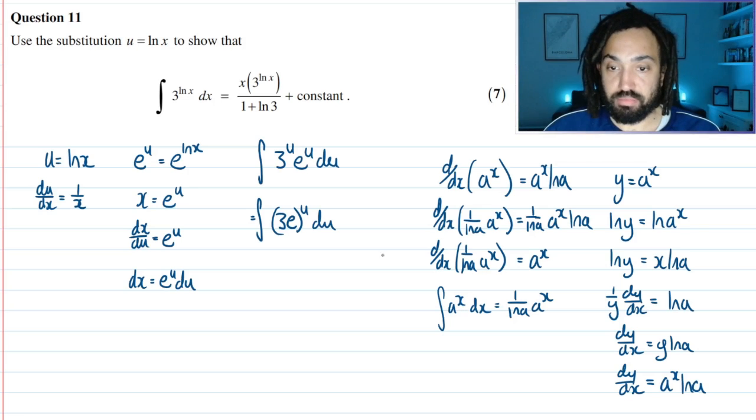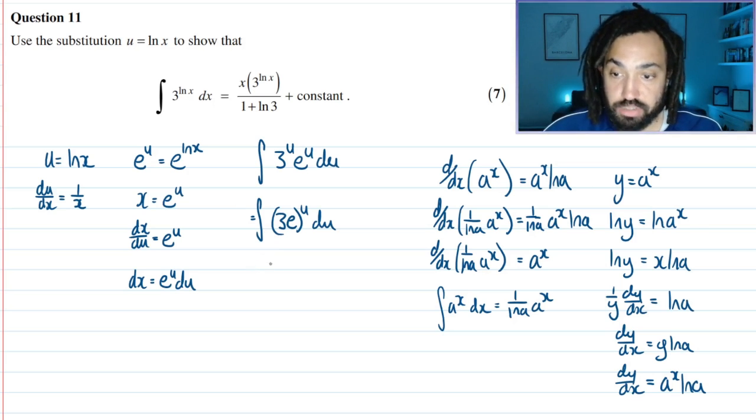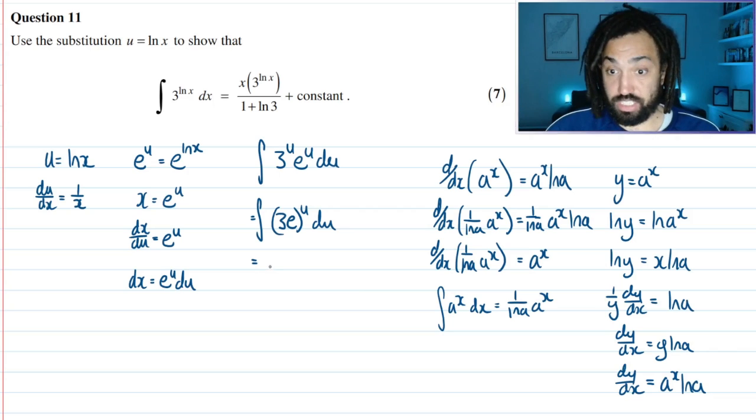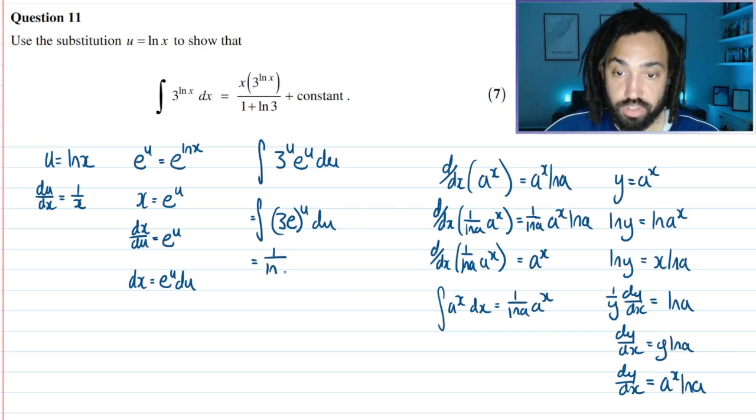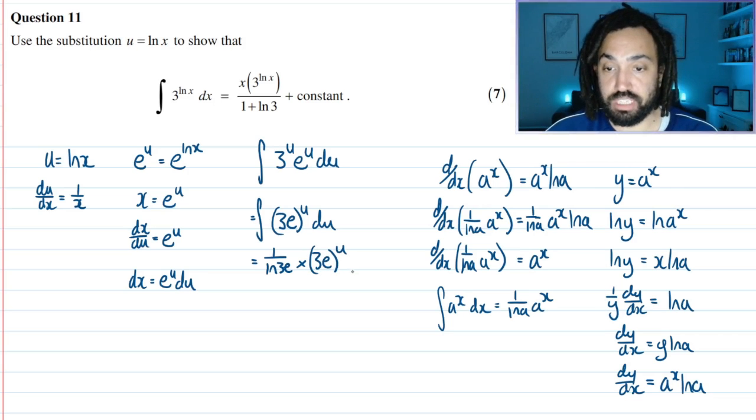How can we use that? Well, a is just a constant, and here 3e is also just a constant. 3 is a number and e is a number 2.7 whatever. So we can use the same argument that when we integrate a constant to the power of the variable, it integrates to 1 over ln of that constant, which is 3e, multiplied by (3e)^u plus c.